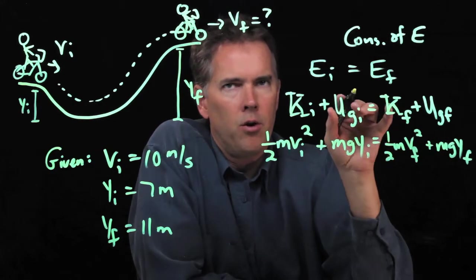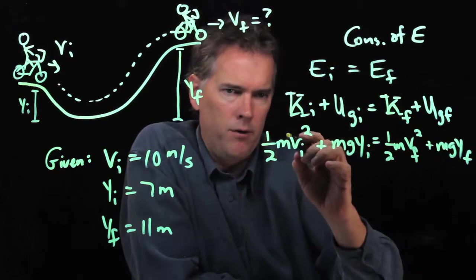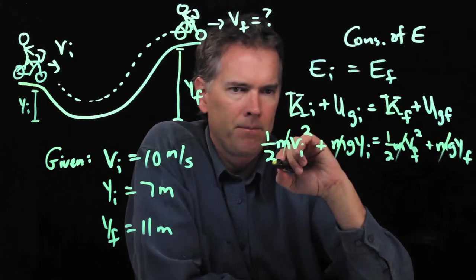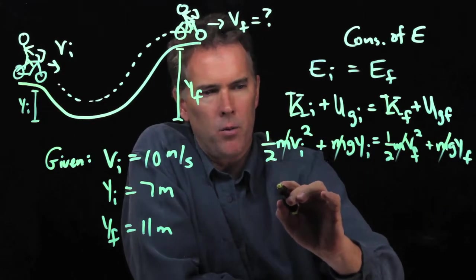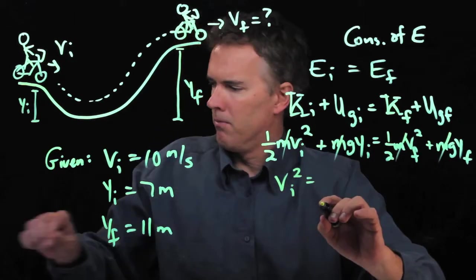To do that we first cross out the m's. If I divide both sides by m, all of those go away. Now let's multiply everything by 2 to get rid of that one half. So we have Vi squared.